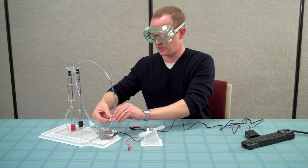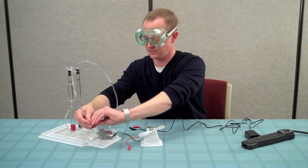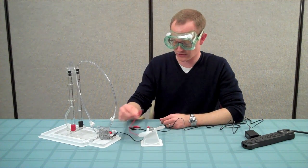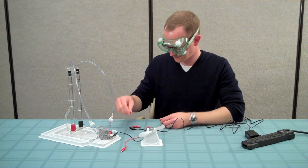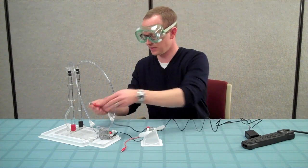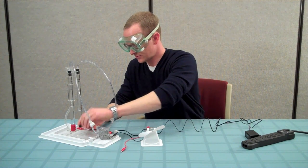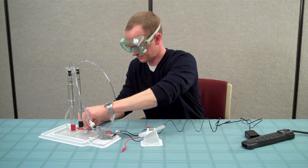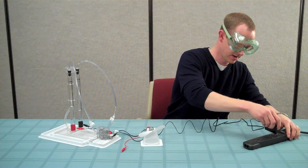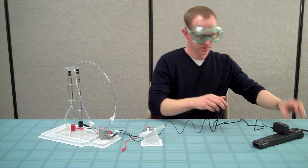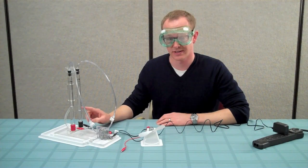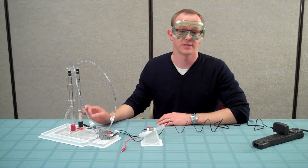Disconnect the electric motor from the fuel cell, reattach the power supply to the electrolyzer, plug in the power supply, and generate more hydrogen and oxygen gases so that you can continue the activity.